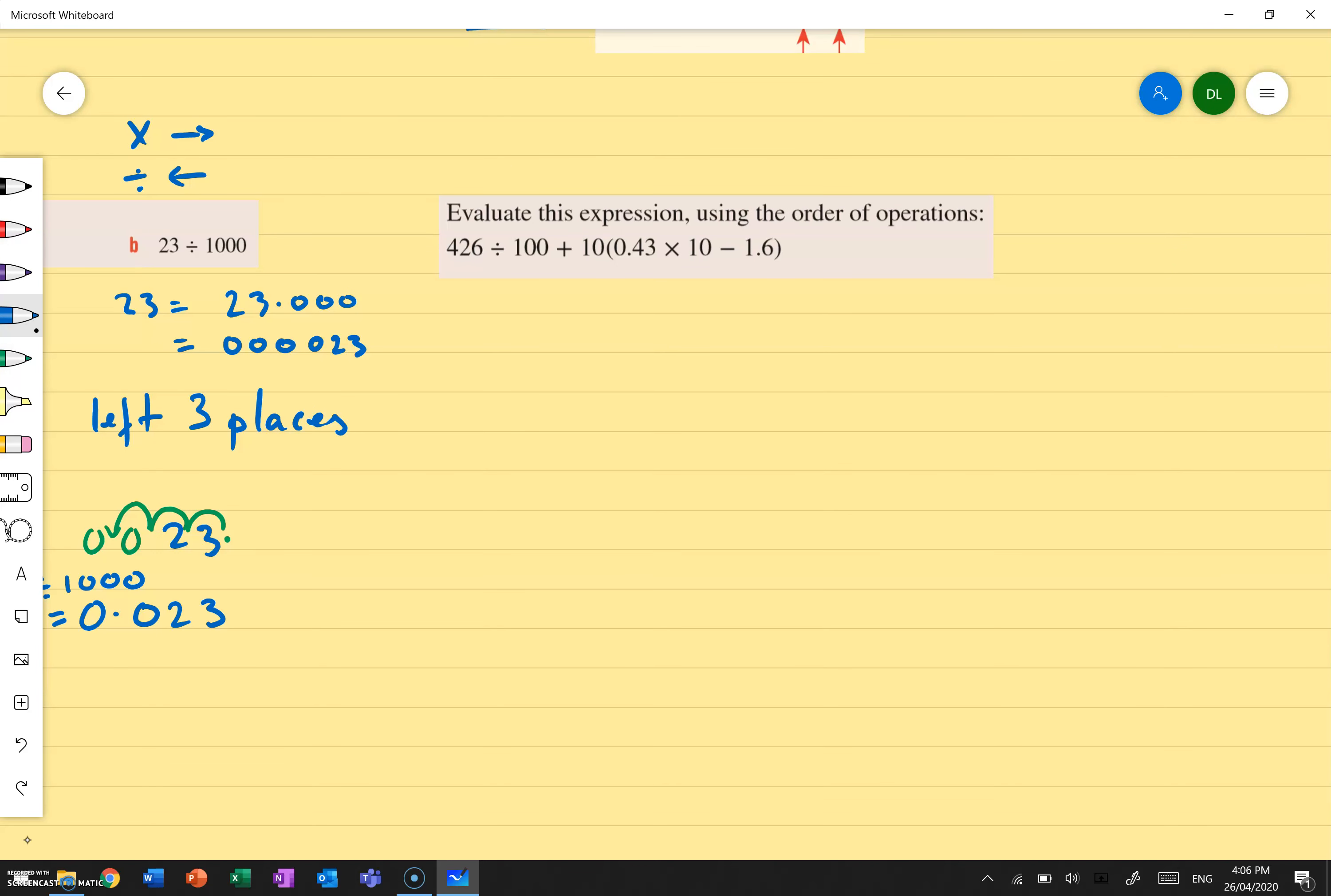Now we have to be able to apply this in a BODMAS situation. So evaluate this expression using the order of operations. First things first, brackets. So in the brackets, I've got 0.43 times by 10 minus 1.6. So 0.43, there's one zero there. So I move the decimal place one to the right. And I instead get 4.3. So I'm going to rewrite the whole question, except I'm going to write 4.3. So 426 divided by 100 plus 10 bracket 4.3 minus 1.6.